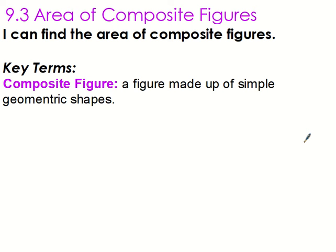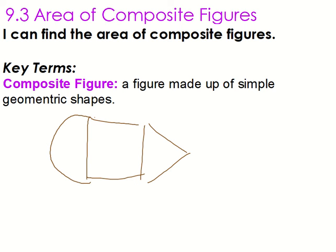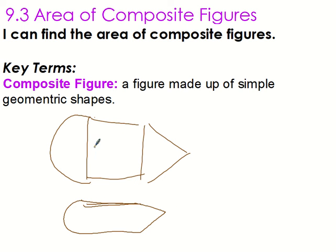9.3, area of composite figures. I can find the area of composite figures. A composite figure is a figure made up of simple geometric shapes — like when you have a shape, and a shape, and a shape. These are shapes we know: half a circle, square, triangle. But together, if I don't draw their separated lines, it would kind of look like one figure. That is how a composite figure works.